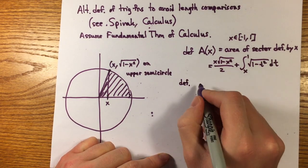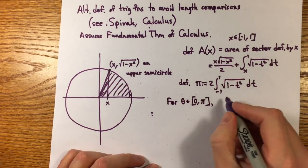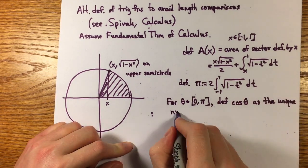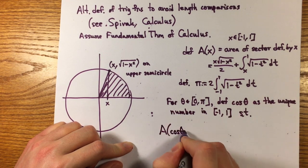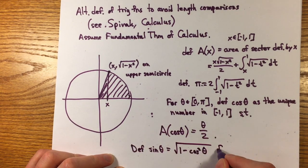He defines pi to be twice the area of the whole semicircle, and defines cosine theta to be the unique number that gives an area of theta over 2. And sine is defined in this range as square root of 1 minus cosine squared.